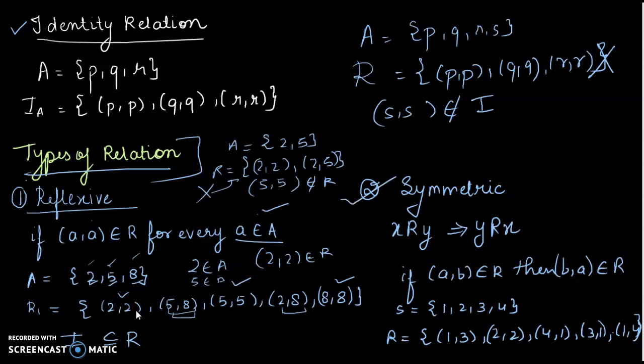For symmetric: when x is related to y, then y should be related to x — if (a,b)∈R then (b,a)∈R. For example, (1,3)∈R means (3,1)∈R — yes, (3,1) is there. (2,2) is symmetric with itself. Then (4,1): when we reverse the elements, we get (1,4), and it is in this relation. Hence it is symmetric.